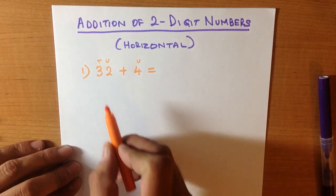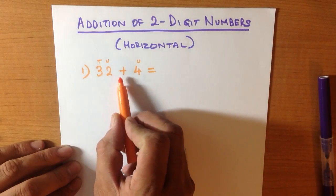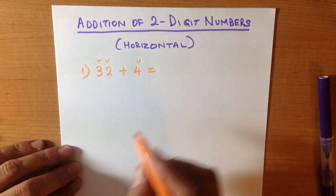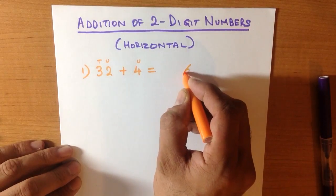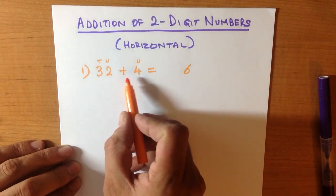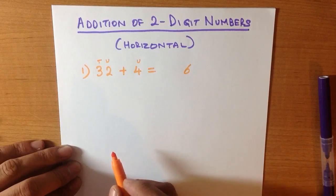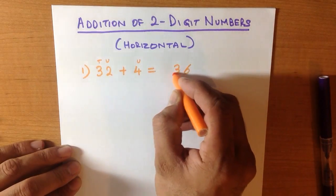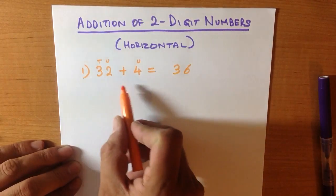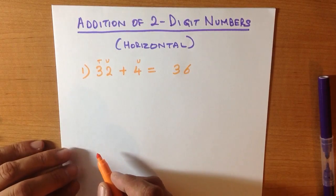There are no tens, so we add the units together. 2 plus 4 is, that's right, 6. 3 plus 0 tens is 3. So 32 plus 4 is 36.